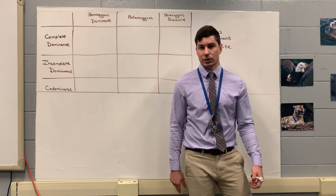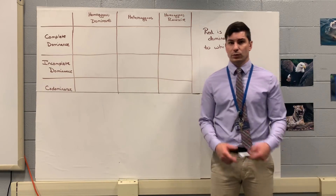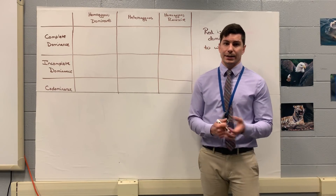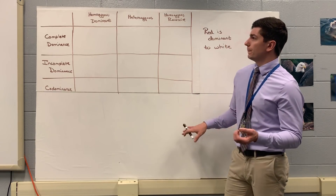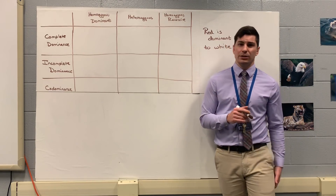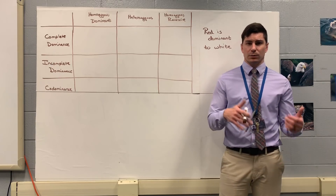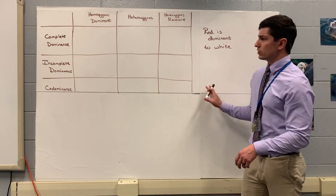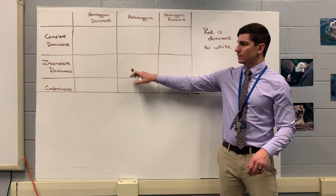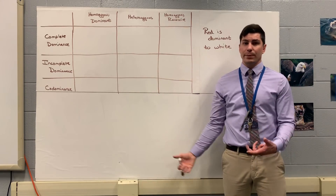So that's homologous, analogous, and vestigial structures. Now just to review genetics real quick — I'm not going to do many Punnett squares because I think you guys were good on those — but just to review our different forms of inheritance: we had complete, incomplete, and codominance, and these were the main three.